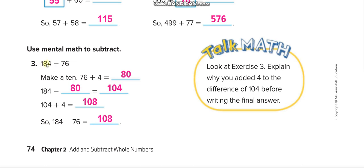Next: 184 minus 76. Mentally, add 4 to 76 to make it 80. Now subtract 80 from 184: that gives 104. But we added 4 to 76 — we subtracted 4 more than needed — so we add 4 back to 104, giving 108.